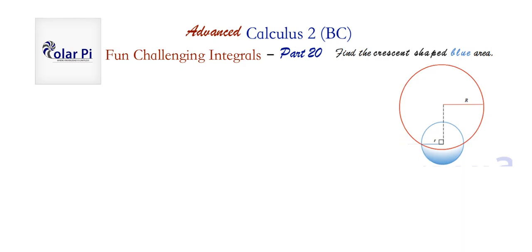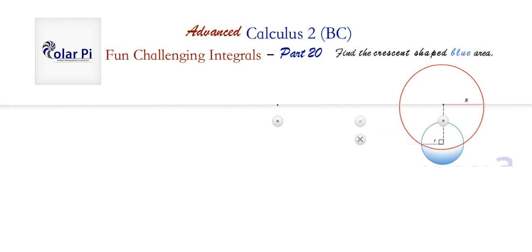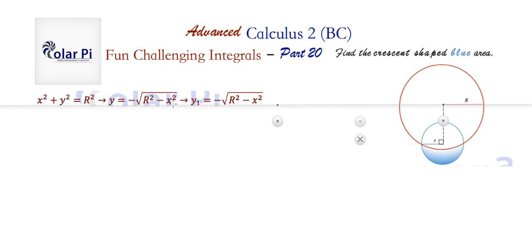One approach to solving this problem starts like this. Let's draw an x-axis right here, and then a y-axis along the dotted line, so that the center of the big circle would be the origin — the x and y-axis meet at the center of the big circle. That means the equation of the big circle looks like this: x squared plus y squared equals big R squared. From there, we can solve for y: y equals plus or minus the square root of big R squared minus x squared.